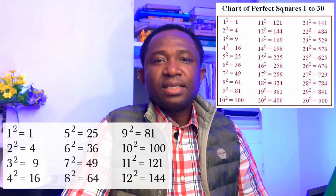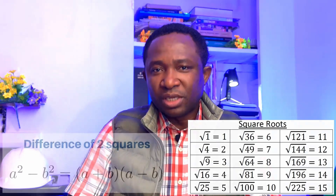This is a chart of perfect squares from 1 to 30. When you take the square root of a perfect square, you should be expecting a natural number. Natural numbers are 1, 2, 3, 4, 5, 6, and it goes on to positive infinity.